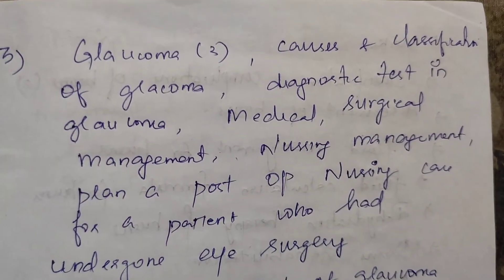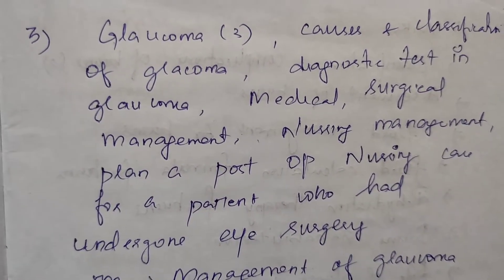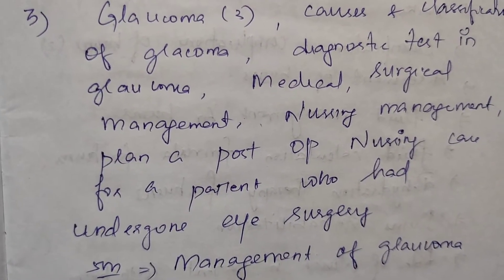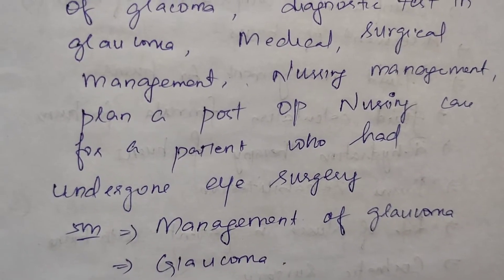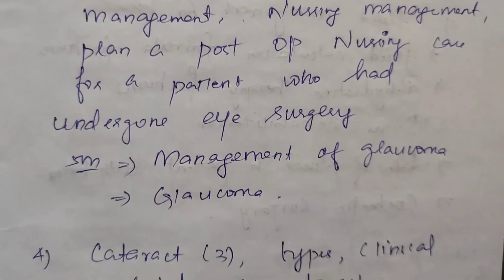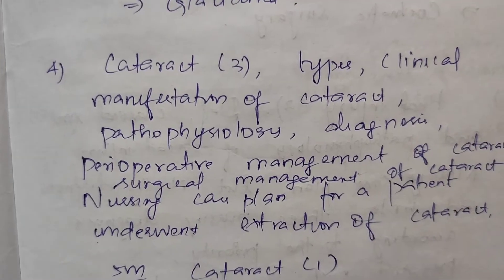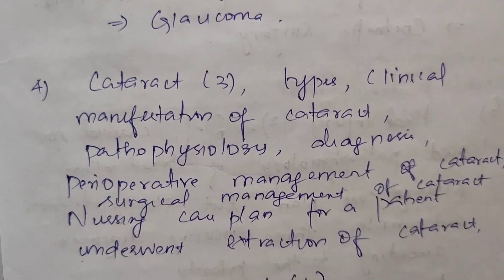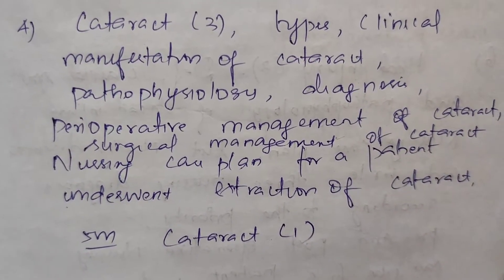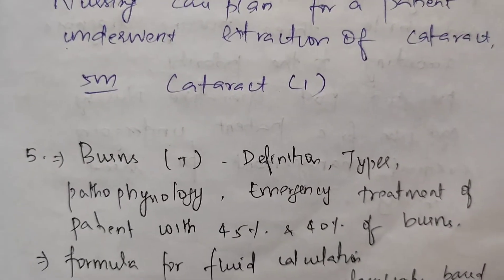Next, eye-related disorders chapter. Glaucoma appears three times in 15-mark questions, which includes definition, causes and classification of glaucoma, diagnostic tests, medical and surgical management, nursing management, and planning a post-operative nursing care for a patient who had undergone eye surgery. In 5 marks, management of glaucoma. Next question: cataract, three times — definition, types, clinical manifestation, pathophysiology, diagnosis, perioperative and surgical management of cataract, nursing care plan for a patient who underwent extraction of cataract, and in 5 marks, cataract two times.